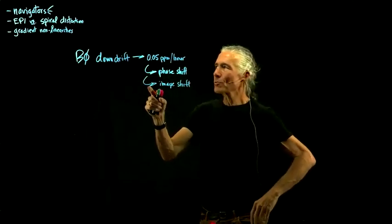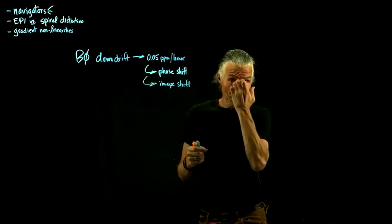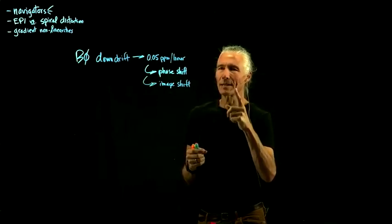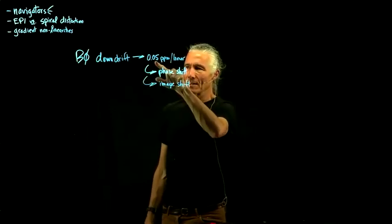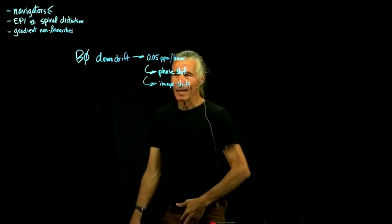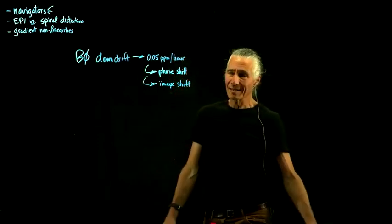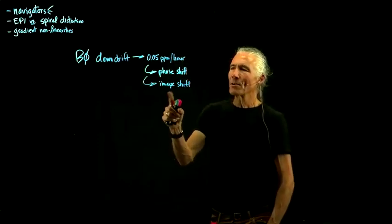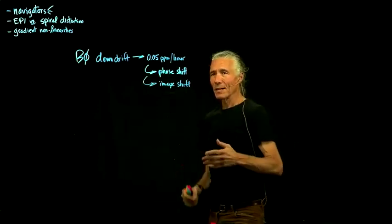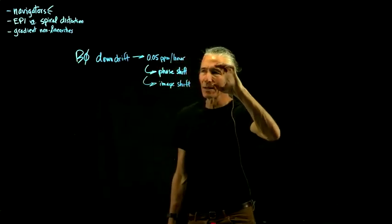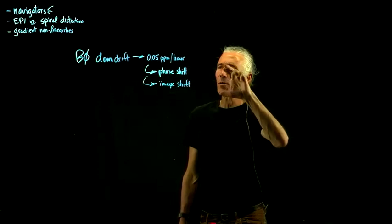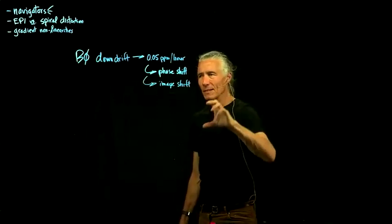Normally before you do every scan, you do a frequency pre-scan, which is an attempt to find out what the center frequency currently is. But if you're recording really rapid scans — like 20 or 15 slices per second — there's no way you can do one of these frequency pre-scans for every slice. It's enough to actually cause a visible shift — about a voxel over the space of five minutes. That's a substantial shift that you'll have to take care of.